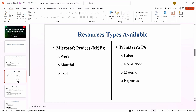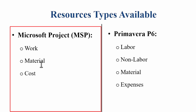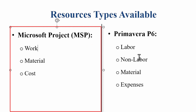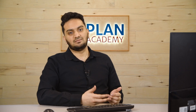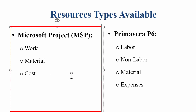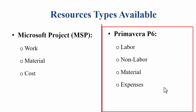The next key difference is resource type. In Microsoft Project we have work, material, and cost. Under work you will have mostly your labor, non-labor, and all those things. Under material you will have all kinds of materials. Under cost you will put in fixed costs and define that in Microsoft Project. Whereas in P6 you have four types: labor, non-labor, material, and expenses. Expenses and cost are quite similar between Microsoft Project and Primavera P6.